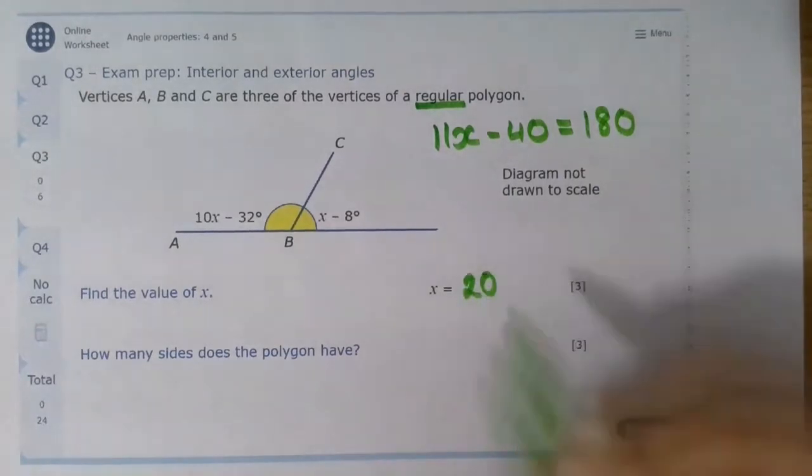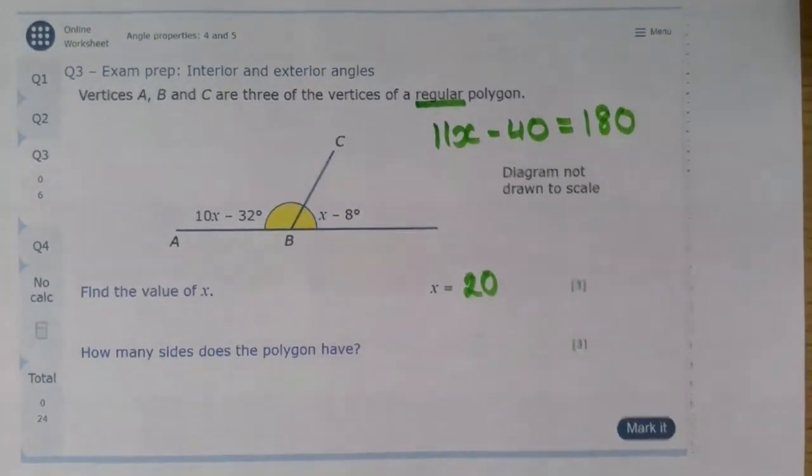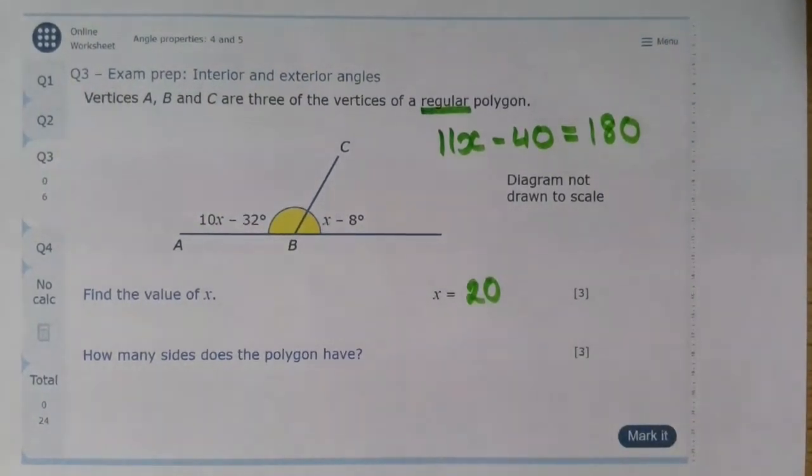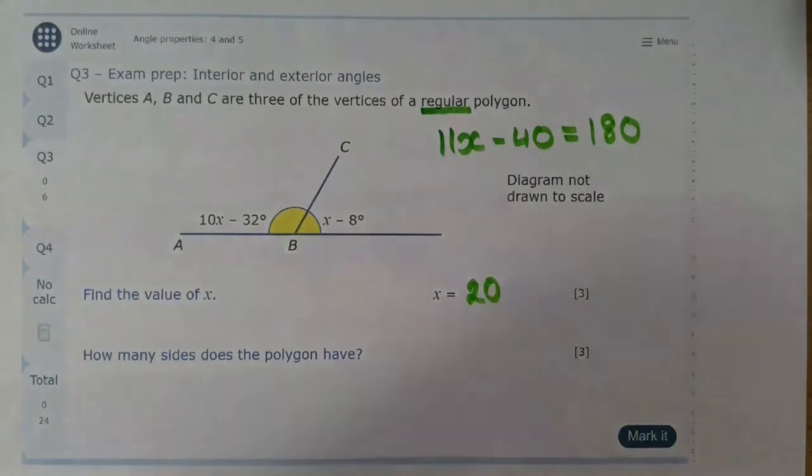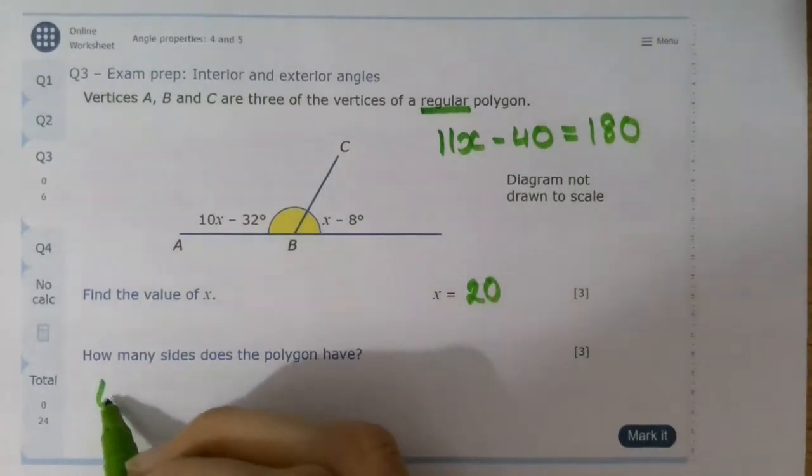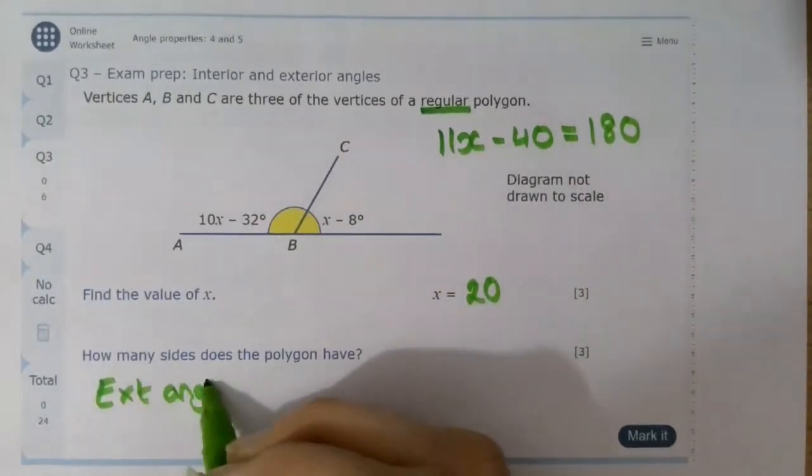How many sides does the polygon have? Now there are two ways to do this. One way involves a formula that's easy to get wrong. The one that's easy to get right is that the exterior angles always add up to 360.